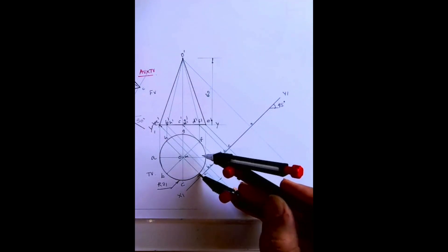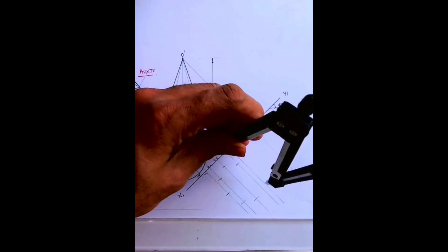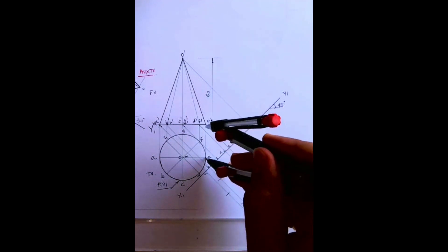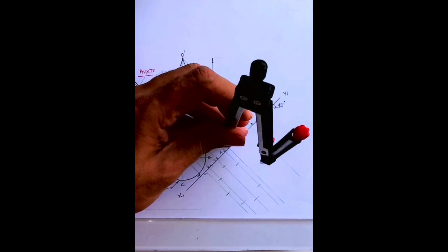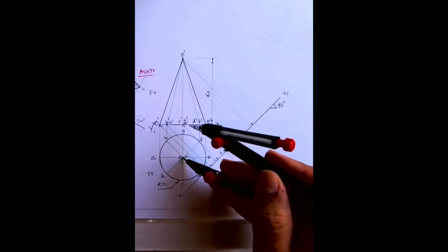From d also extend like this, from d also expand like this. From e also, this way. And then x y to b.